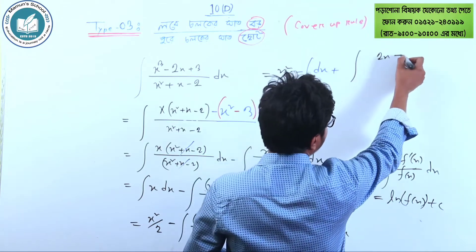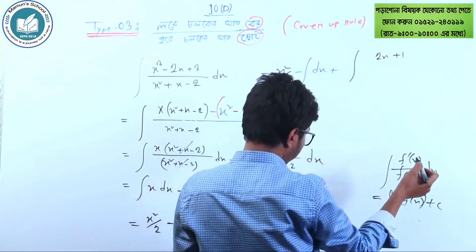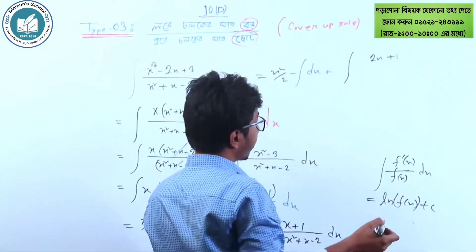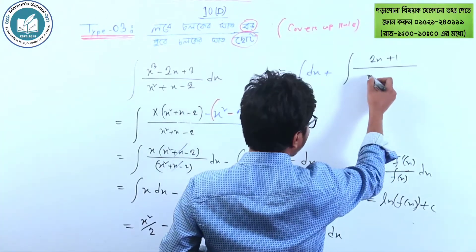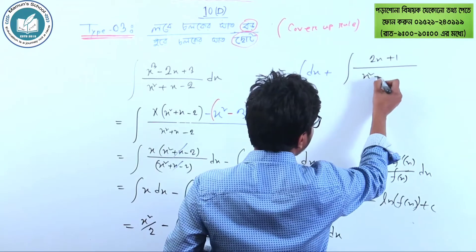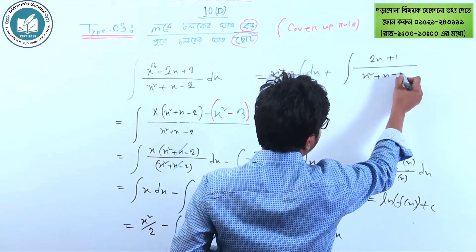So we have 2x plus 1, and x squared minus 1.